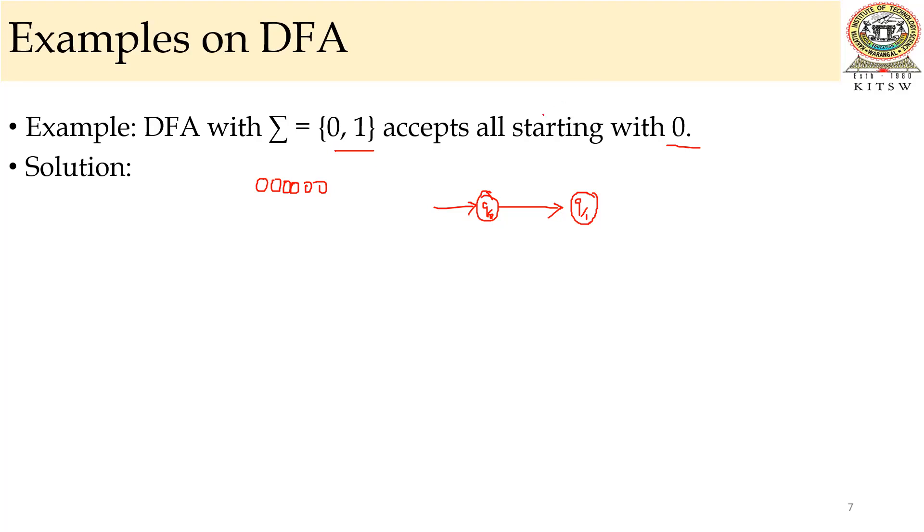The solution for this one is, see, the input is here: zeros and ones are the input symbols. And which accepts all starting with 0, that is 0, 1, 1, or 0, 1, 0, 0, 0, 1. Everything, whatever it may be, it starts with only 0. That must be, we have to construct that.